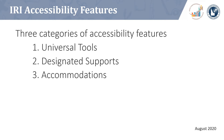Available accessibility features for administration of the IRI may be embedded or non-embedded and are grouped into three categories: Universal Tools, Designated Supports, and Accommodations. This presentation will explain each of these categories and what features are available to students.